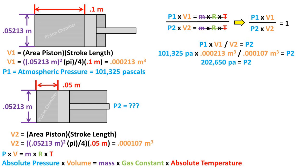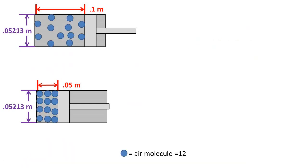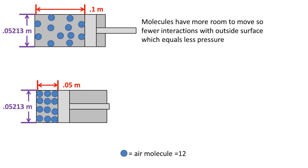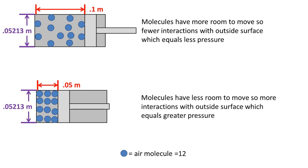So we have doubled the pressure when we have decreased the volume by one half. The reason the pressure increases is that there are the same number of molecules in both state 1 and state 2. When the molecules have more room to move, there are fewer interactions with the outside surface, which equals less pressure. When the molecules have less room to move, there are more interactions with the outside surface, which equals a greater pressure on the outside surface.